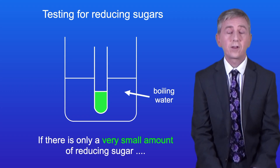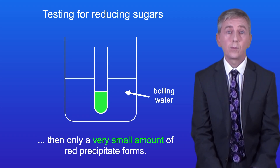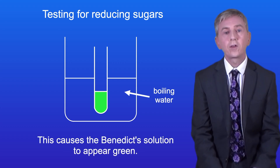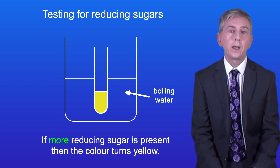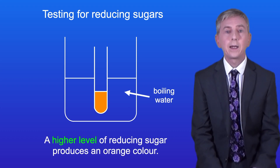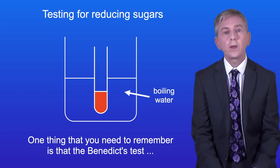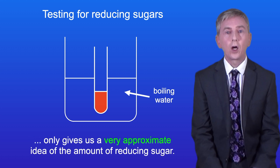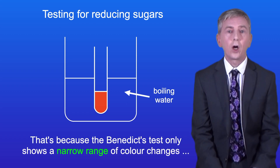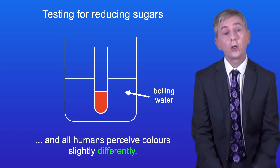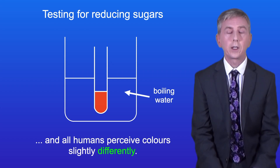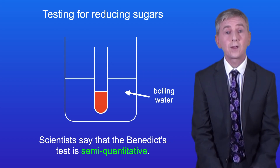If there's only a very small amount of reducing sugar then only a very small amount of red precipitate forms, causing the Benedict's solution to appear green. If more reducing sugar is present then the colour turns yellow. A higher level produces an orange colour, and if a lot of reducing sugar is present we see a brick red colour. Note that the Benedict's test is only semi-quantitative, giving an approximate idea of the amount of reducing sugar, because it shows a narrow range of colour changes and humans perceive colours slightly differently.